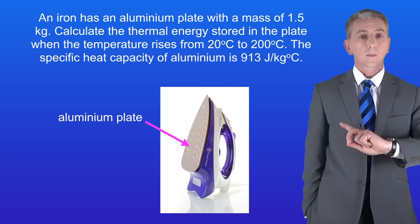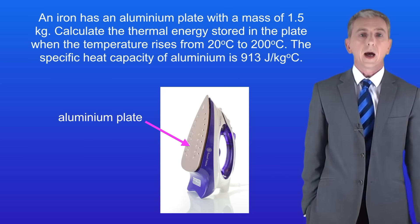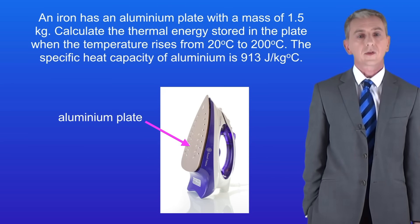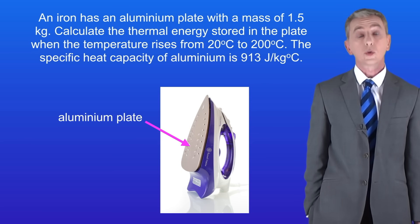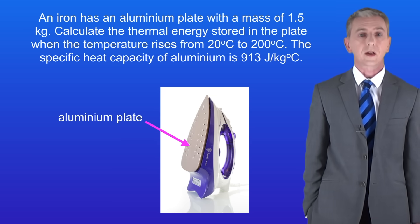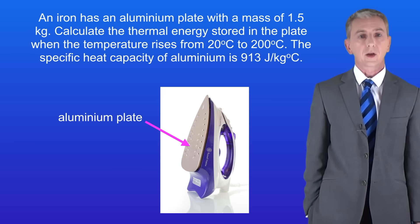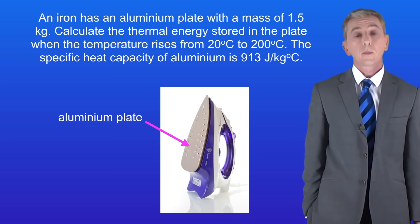Here's a question for you. An iron has an aluminium plate with a mass of 1.5 kilograms. Calculate the thermal energy stored in the plate when the temperature rises from 20 degrees Celsius to 200 degrees Celsius. The specific heat capacity of aluminium is 913 joules per kilogram per degree Celsius. Pause the video and try this question yourself.